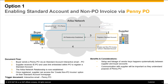The penny PO will look exactly like a standard account interactive email PO, but it will only be for one cent and only needs to be sent one time. The document flow is as follows: first, the buyer sends a penny PO via a standard account interactive email PO to the supplier. The supplier receives the interactive email PO and uses the link embedded within the PO to register their standard account.